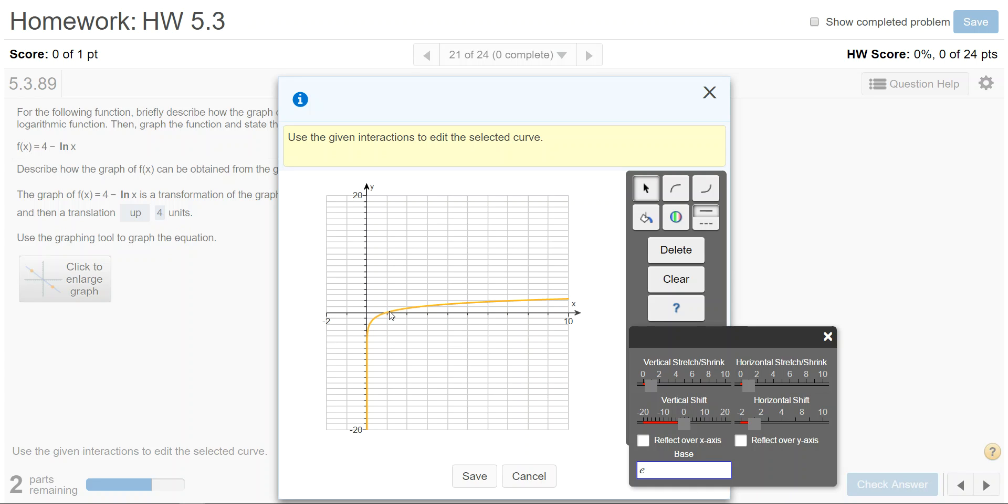So I want to put in the movement up 4 and the reflection. Now to graph reflections, you have to actually reflect it first. So I want to click to reflect it over the x-axis, and then I want to take this reflected graph and do the up 4 movement. Go to the vertical shift, click the box, and move to the right until you see positive 4.